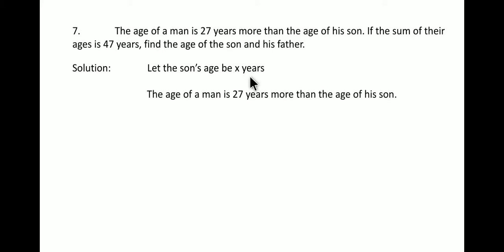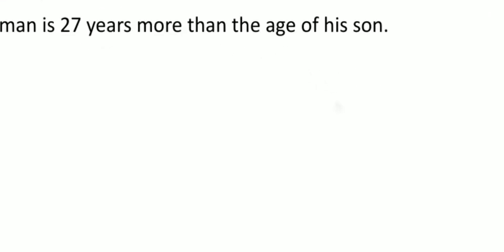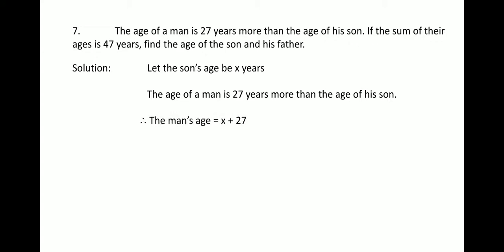Now, the age of a man is 27 years more than the age of his son. It's mentioned in the question. Therefore, the man's age will be equal to x plus 27, because he is 27 years older. So x plus 27 years will be the age of the man.